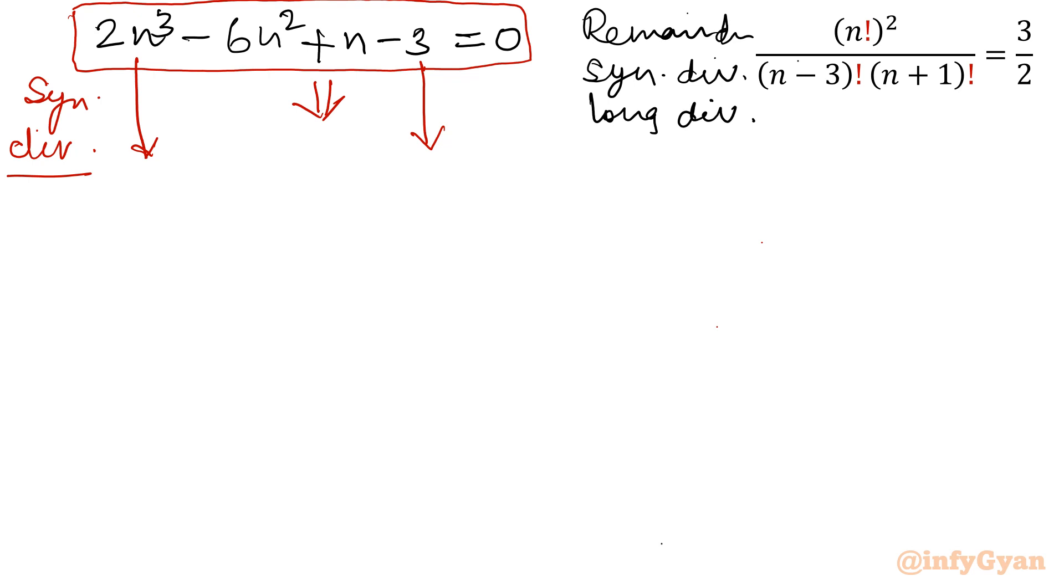So if you will find out the factor of 2, leading coefficient is 2, so factors of 2 that would be 1 and 2. So plus minus sign you have to consider. Similarly for the constant term, the factors of 3 can be 1 and 3. So I will write plus 1 and plus minus 3.